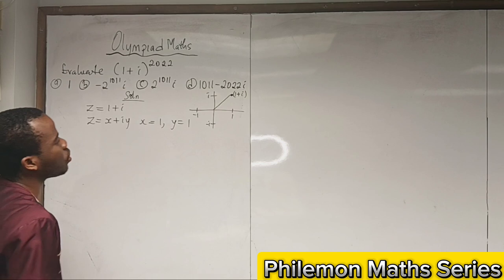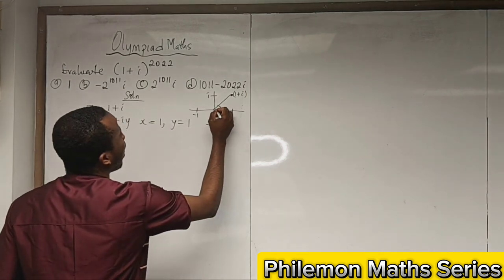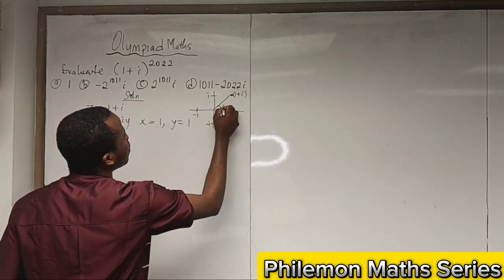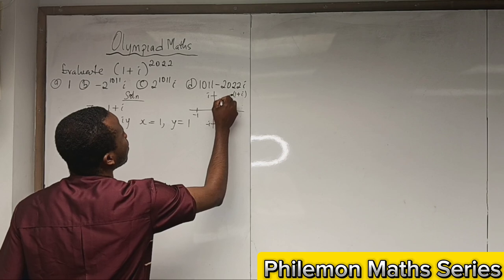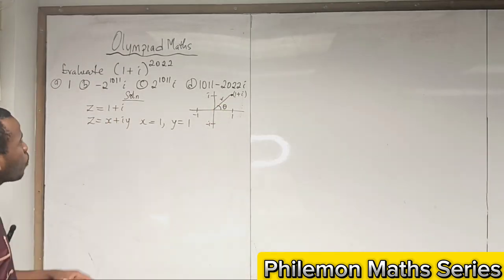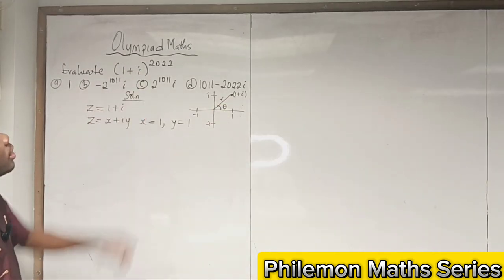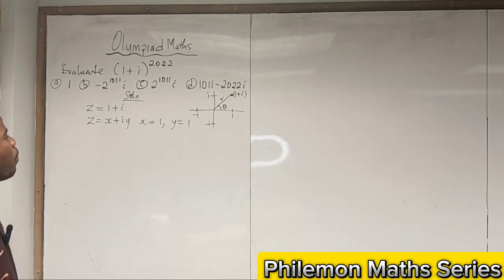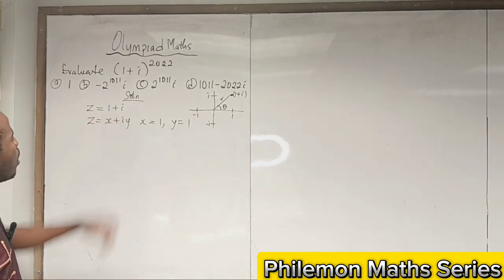So in the first quadrant, we are looking for this angle and this length. This angle is theta and this length is r, which is the modulus.